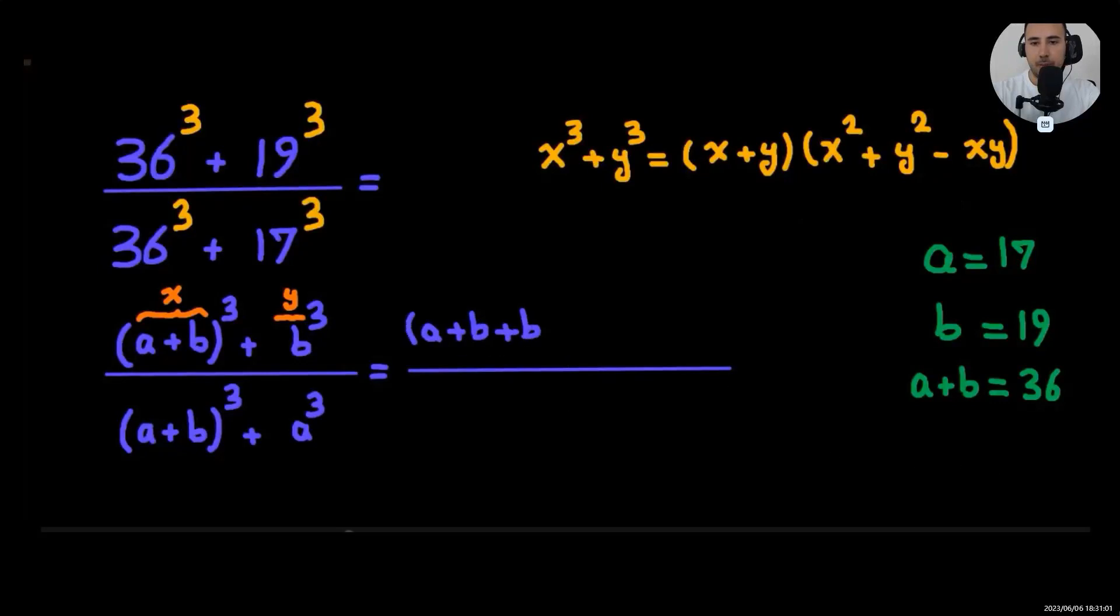x plus y will be (a+b) plus b. x squared was (a+b) squared plus b squared minus xy is (a+b) times b.